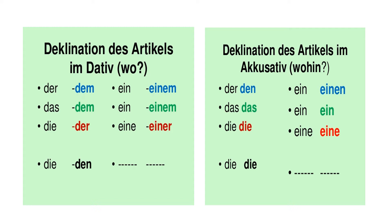And the same thing happens with the unbestimmte Artikel. Ein becomes einem in Dativ; das again becomes einem, and die becomes einer. There is no plural form. And same in Akkusativ — only change is in the masculine article: ein becomes einen. Das — that is ein — remains ein, and einer remains einer. There is no change in feminine articles, and there are no plural unbestimmte Artikel.